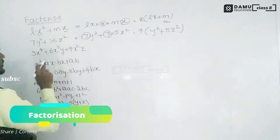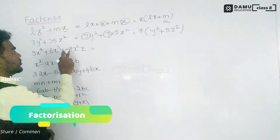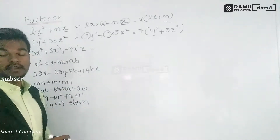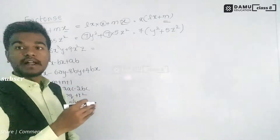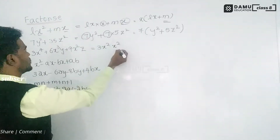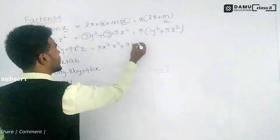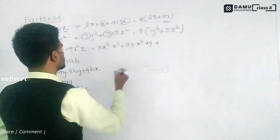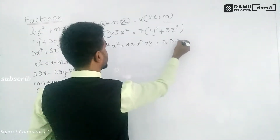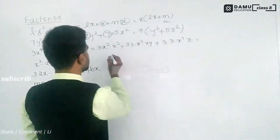Our third question is 3x⁴ + 6x³y + 9x²z. We check what is common: x is present in all terms — x⁴, x³, and x². The least power is x², so we take x² as common. We also check the numerical coefficients: 3, 6, and 9 all share the factor 3. So we can take 3x² as common.